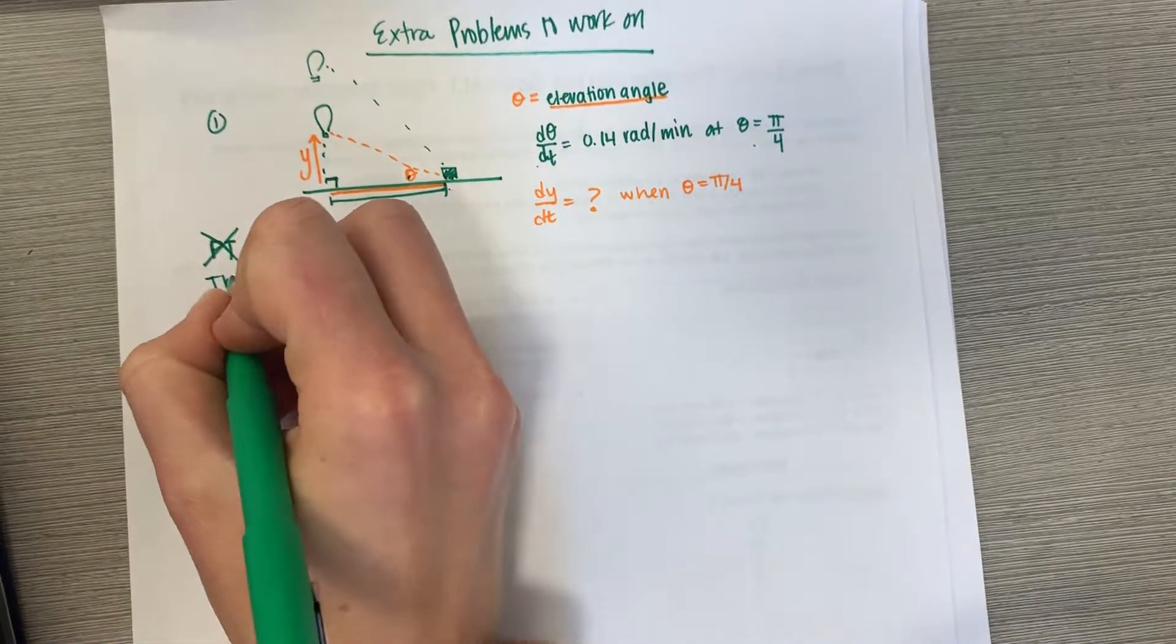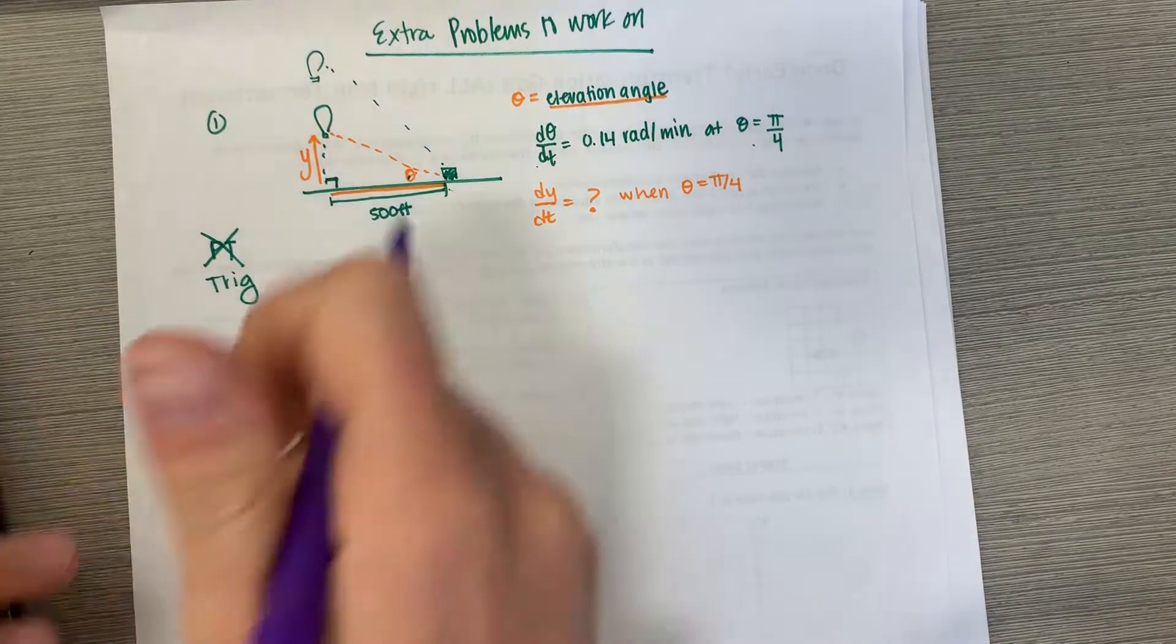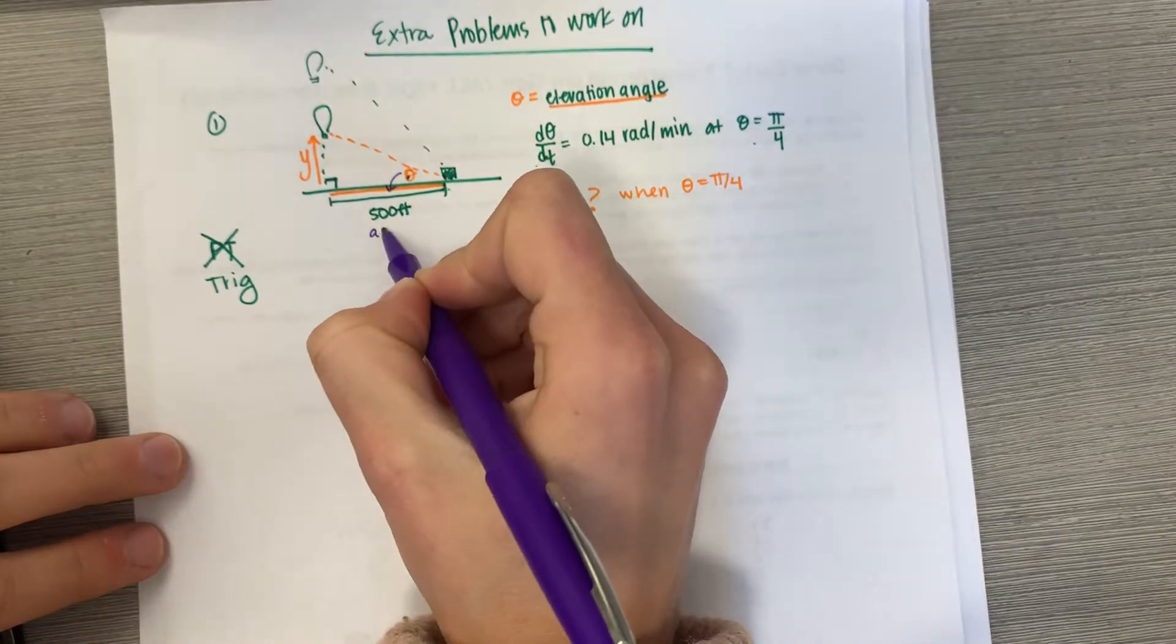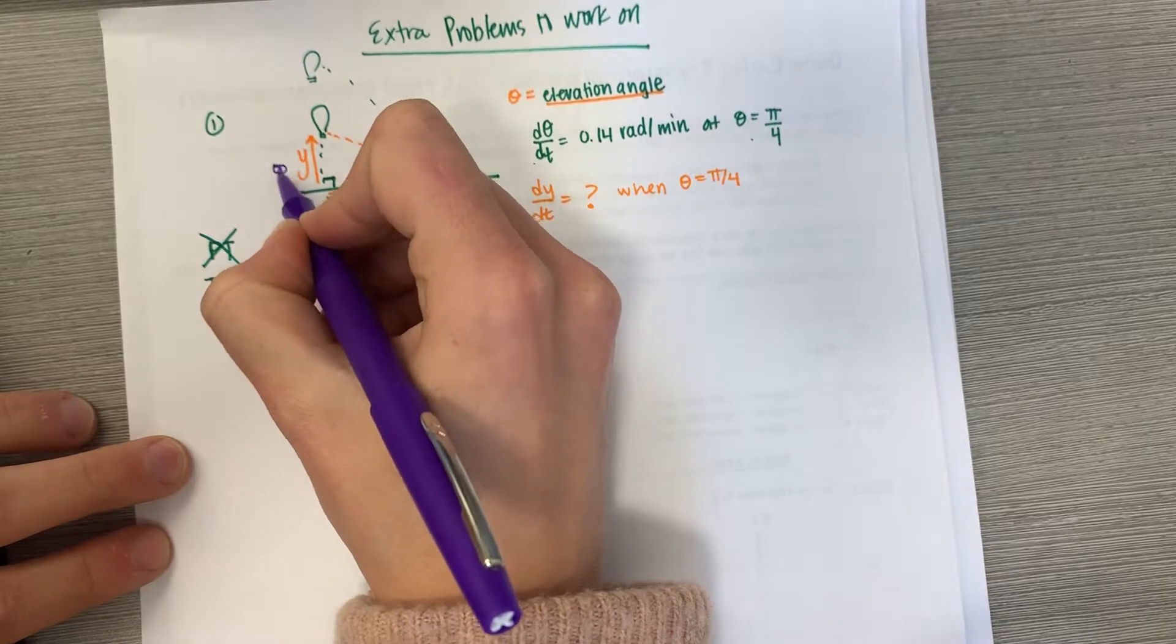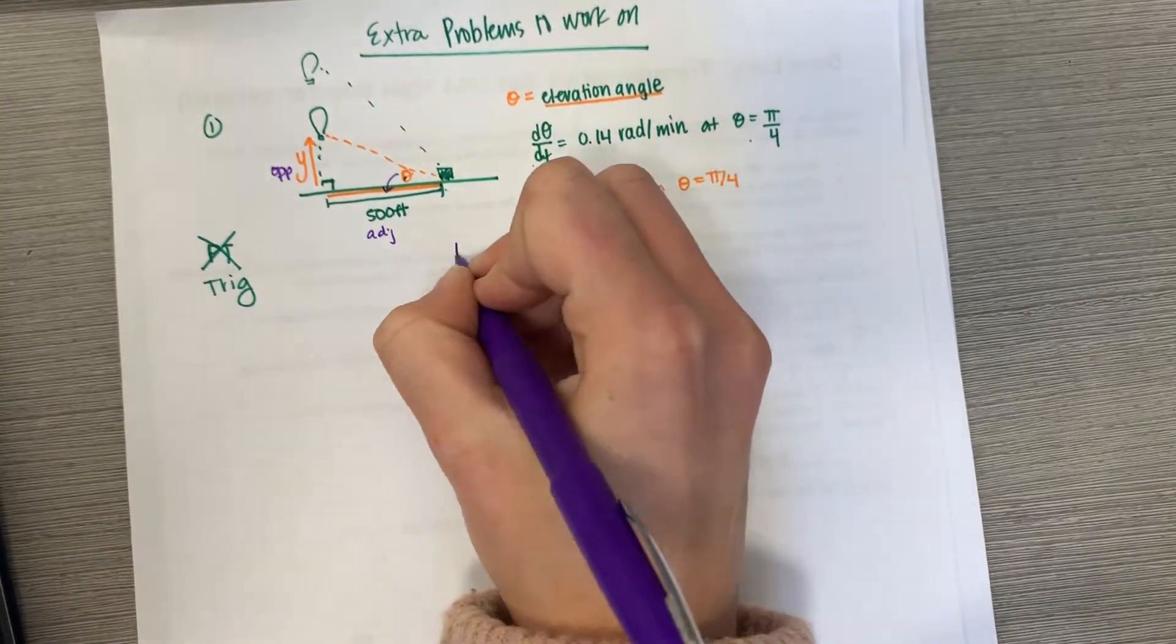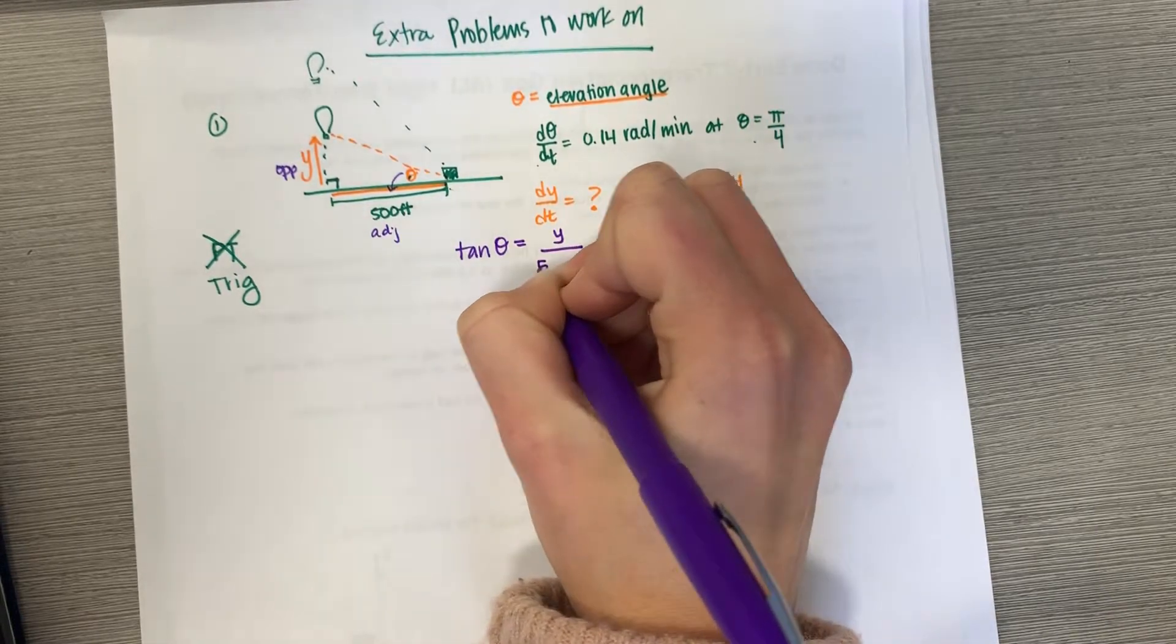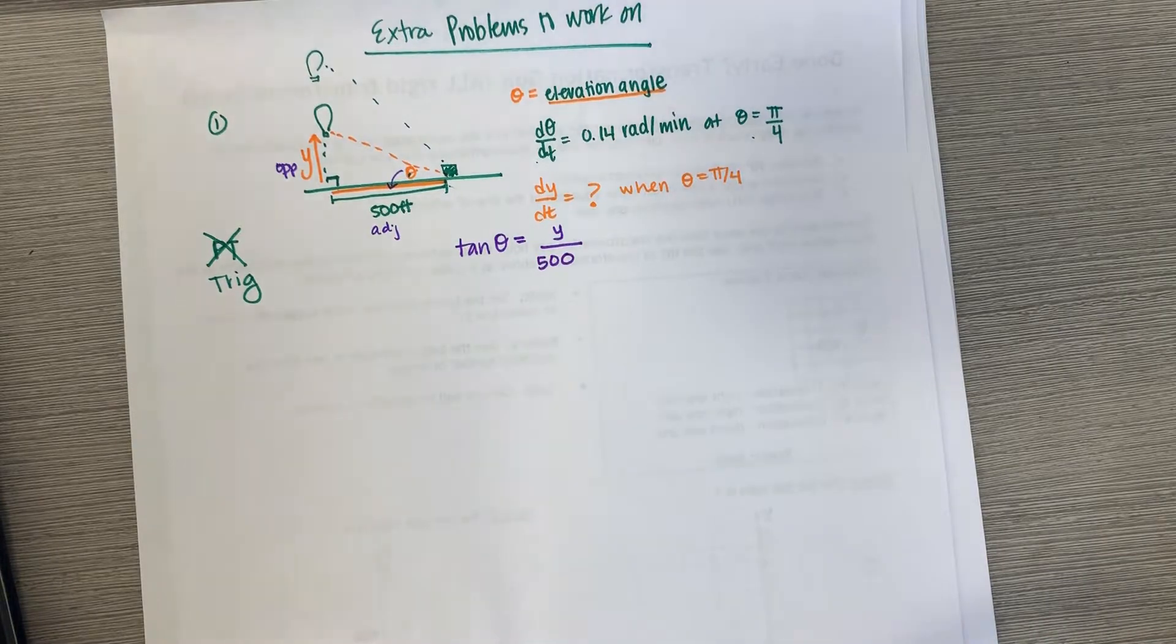I'm hoping you thought of trig and to confirm we have the adjacent side and the opposite side so that would be tangent. Tangent of theta is equal to opposite over adjacent, that 500 feet does not change.